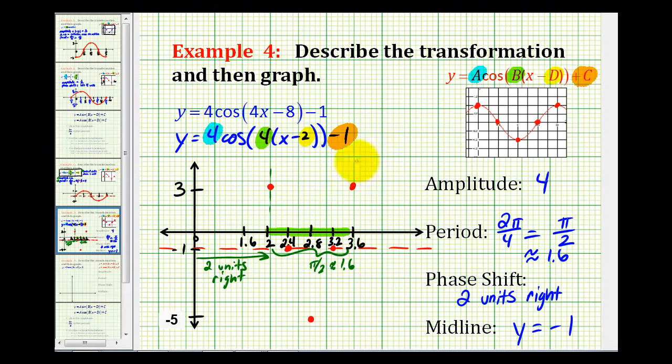Again, keeping in mind, we did round these because our period was pi over 2, which we said was roughly 1.6. And now we can graph one period of this function on this green interval, and it would look something like this.